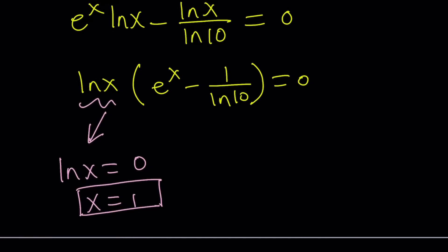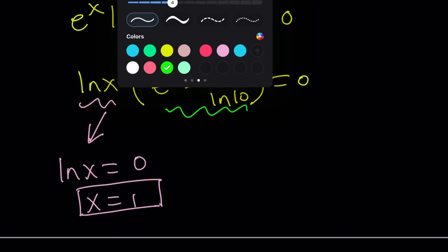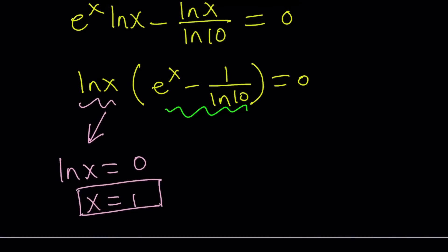What about the other solution? The other solution is not that trivial, but we can still handle it. Let's just set this equal to 0 and go from there. e to the x minus 1 over ln 10 equals 0, which implies e to the x equals 1 over ln 10. Things are nice and dandy, right? So here's the problem. To find x, we do need to natural log both sides. So how do we do that? Let's go ahead and do it.